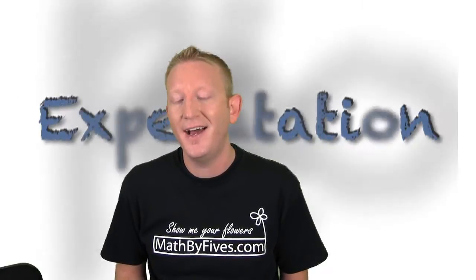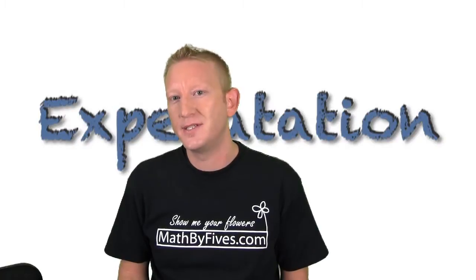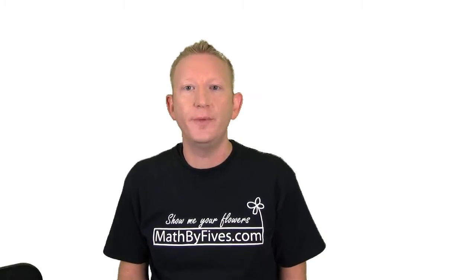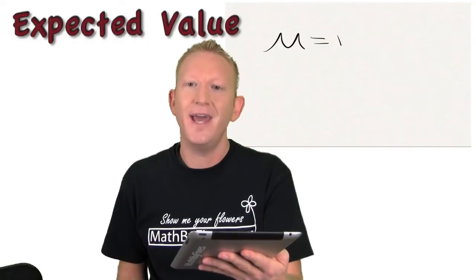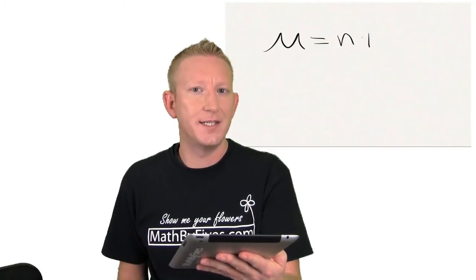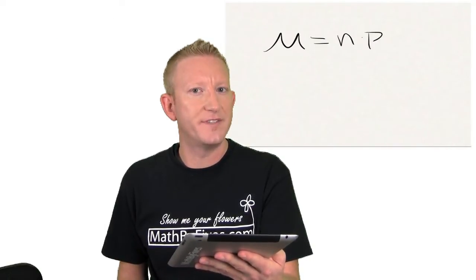That would be the mean or expected value. 30% of the time you're successful, you tried it 10 times, I'd expect to be successful 3 times. And that's what the mean of a binomial probability distribution is going to give you. The mean is equal to n times p, where n is the number of trials and p is the probability of success.